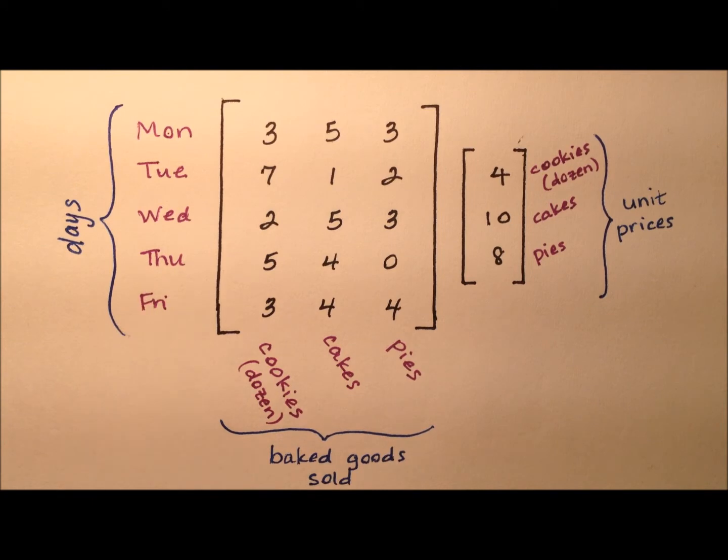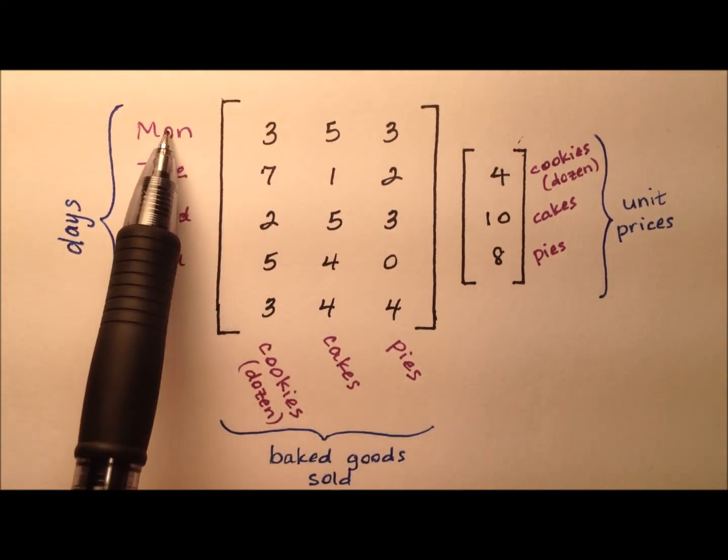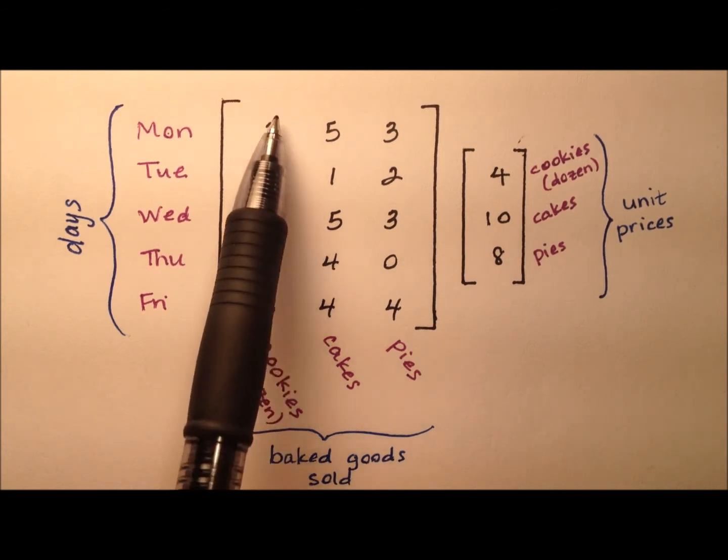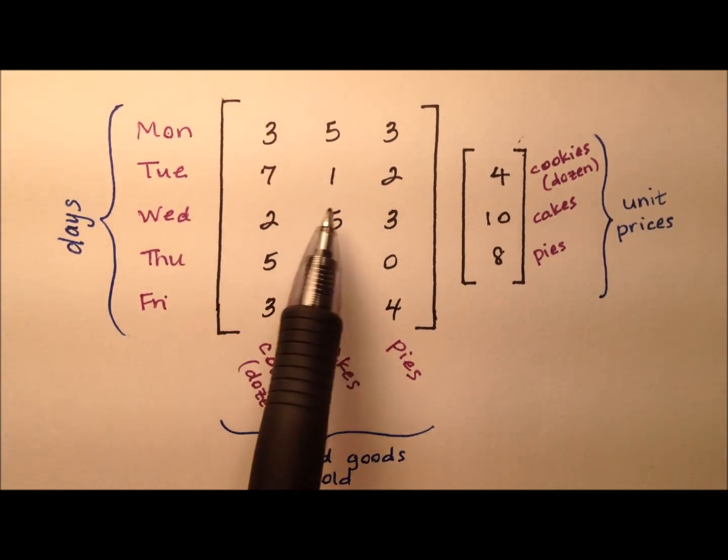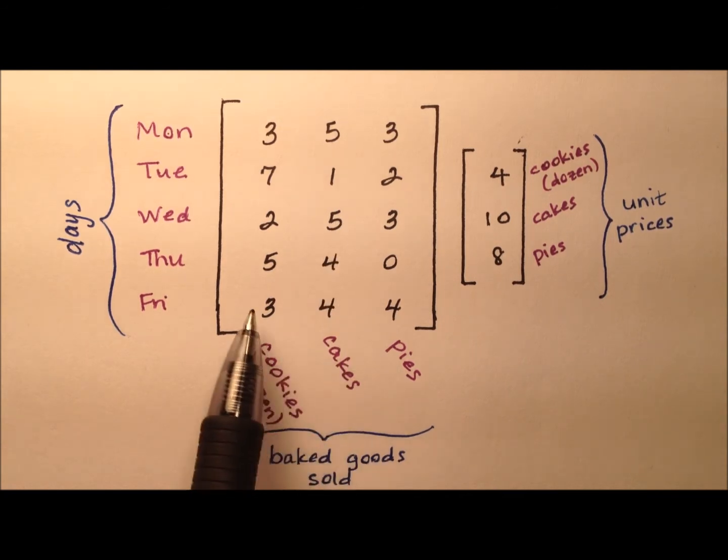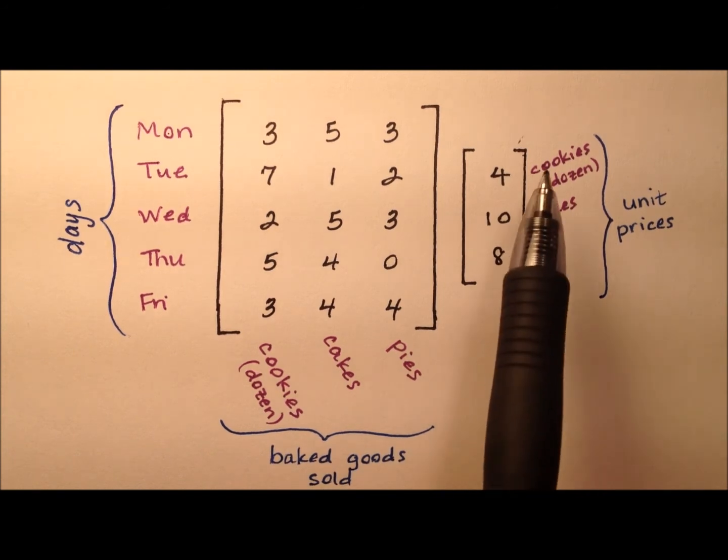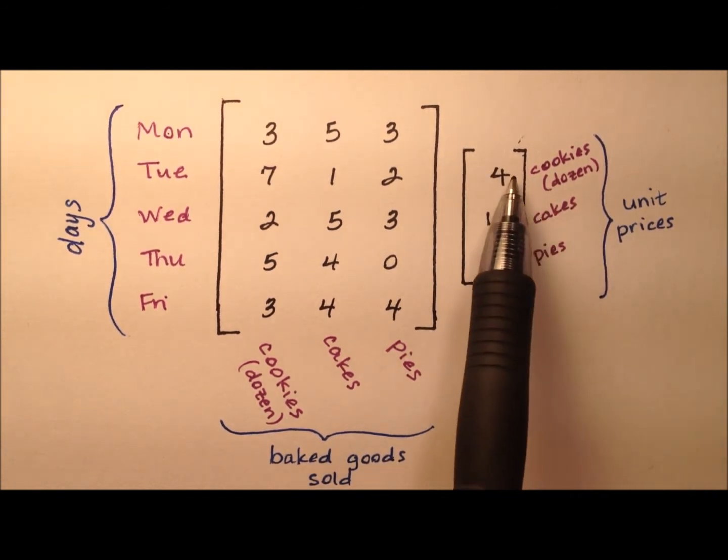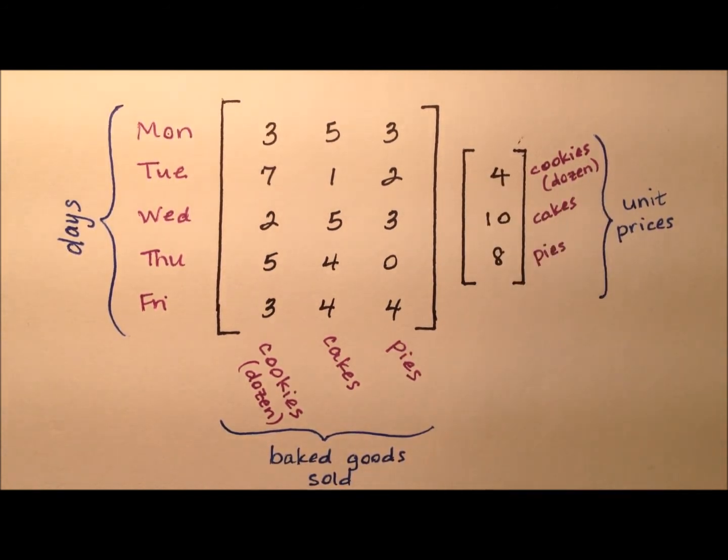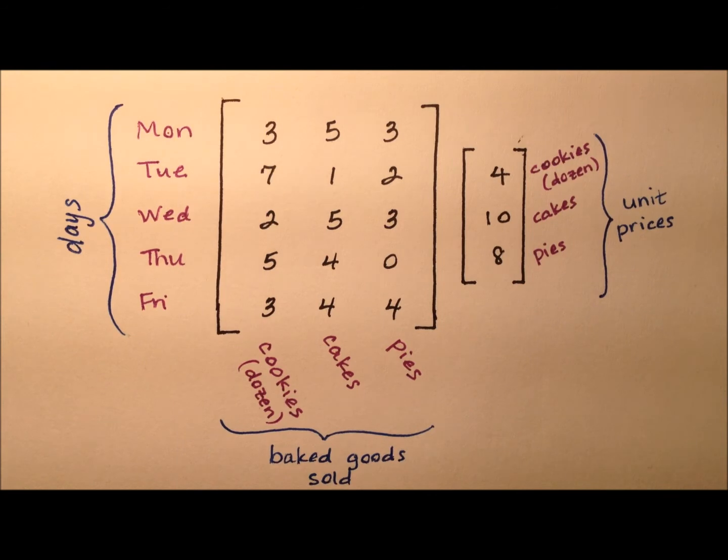Let's look more specifically at these matrices. This three right here represents that on Monday, Julie sold three dozen cookies. This five, Wednesday, she sold five cakes. And the zero here, unfortunately on Thursday, she sold zero pies. We have the unit prices here. Cookies are $4 per dozen, cakes are $10 each, and pies are $8 each. We can set all of this up in this really nice table structure.